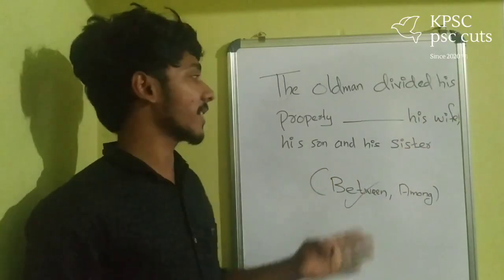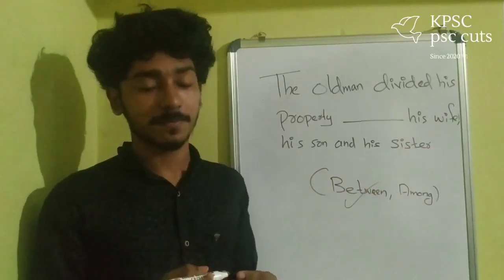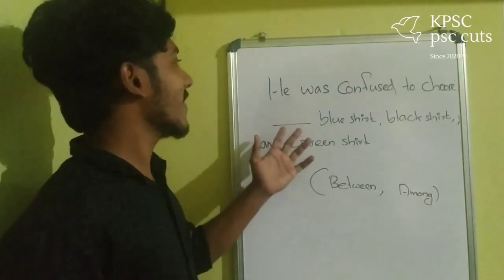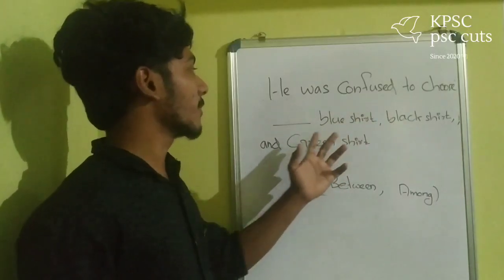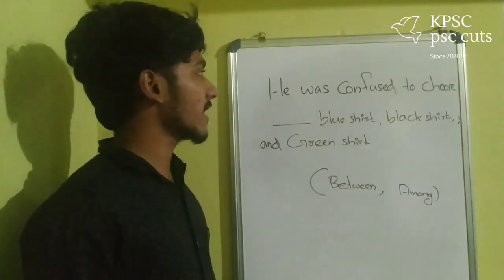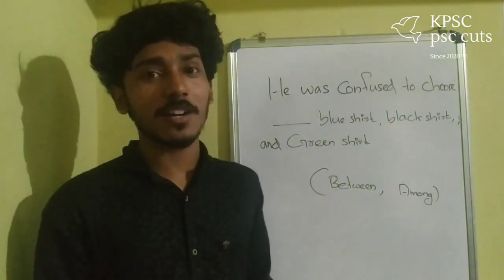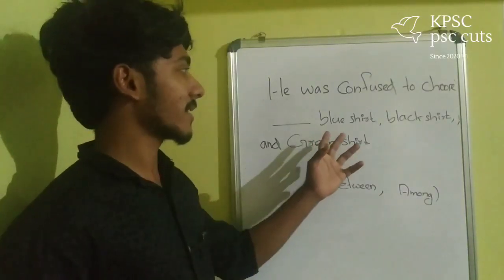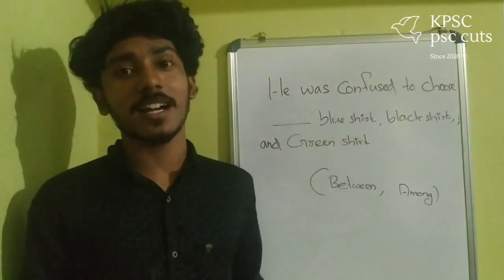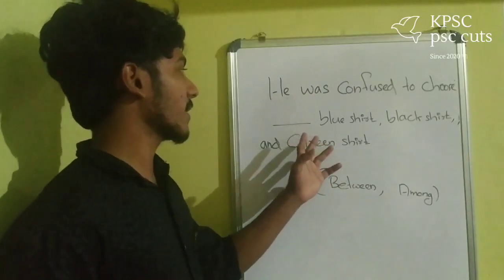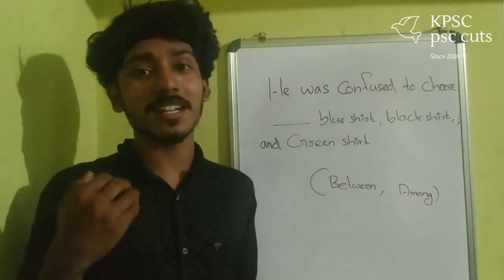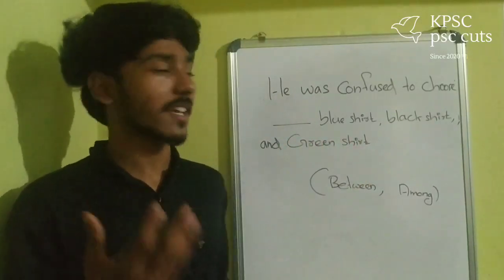Listen to him. He was confused to choose — dash — blue shirt, black shirt and green shirt. If he was confused to choose who he was confused, if he had come in a closeitude, he was confused to choose.